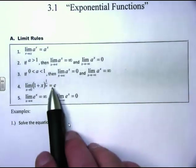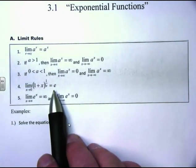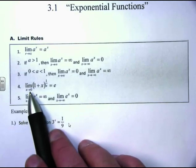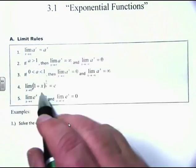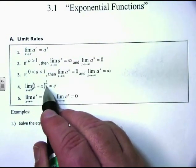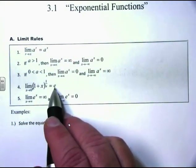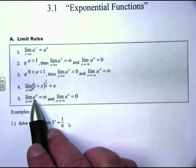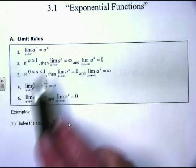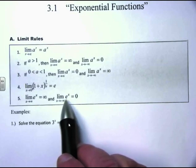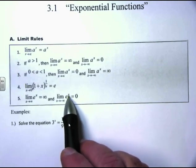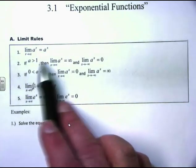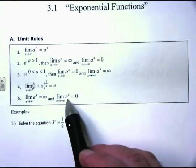This is where e — that natural number 2.71828 — actually comes from. If I take the limit as x approaches 0 from the positive side of (1 + x) raised to the 1/x, you get e out of this. Since e is approximately 2.71828 and is bigger than 1, the limit as x approaches infinity of e to the x is infinity, and the limit as x approaches negative infinity of e to the x is 0.